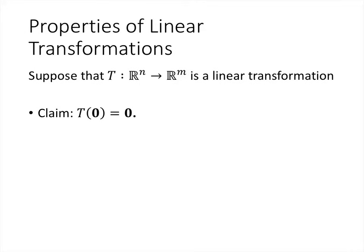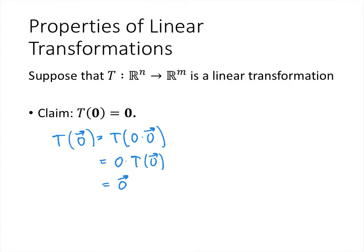One way to prove that is by realizing that plugging the zero vector into our function is the same as zero times the zero vector. Multiplying the zero vector by zero still gives the zero vector. Using our linearity property, that scalar can be pulled out, giving us zero times t of the zero vector. When we multiply by the scalar zero, we get the zero vector.